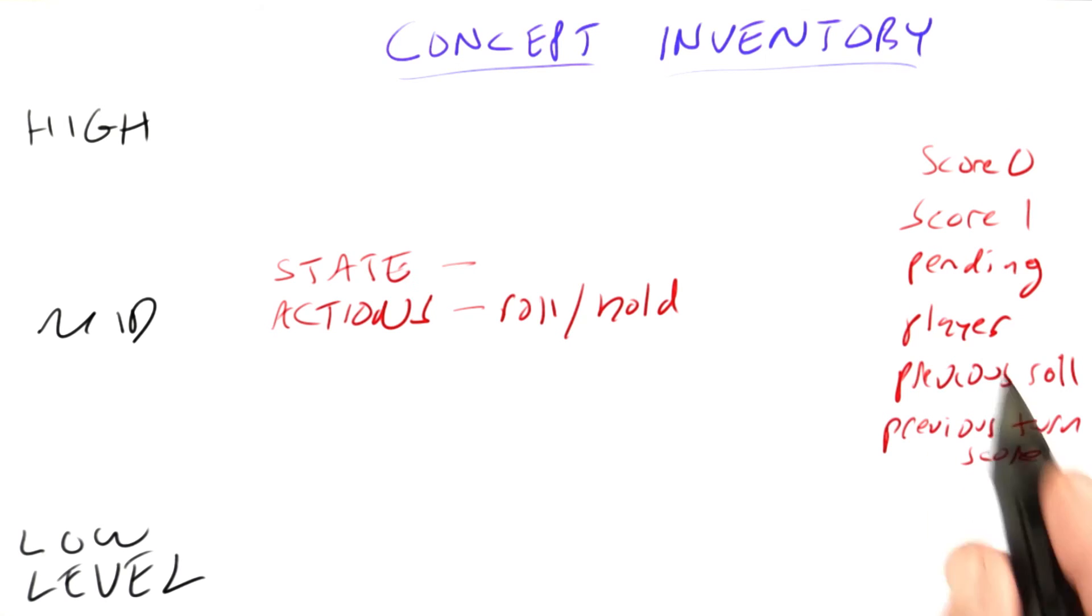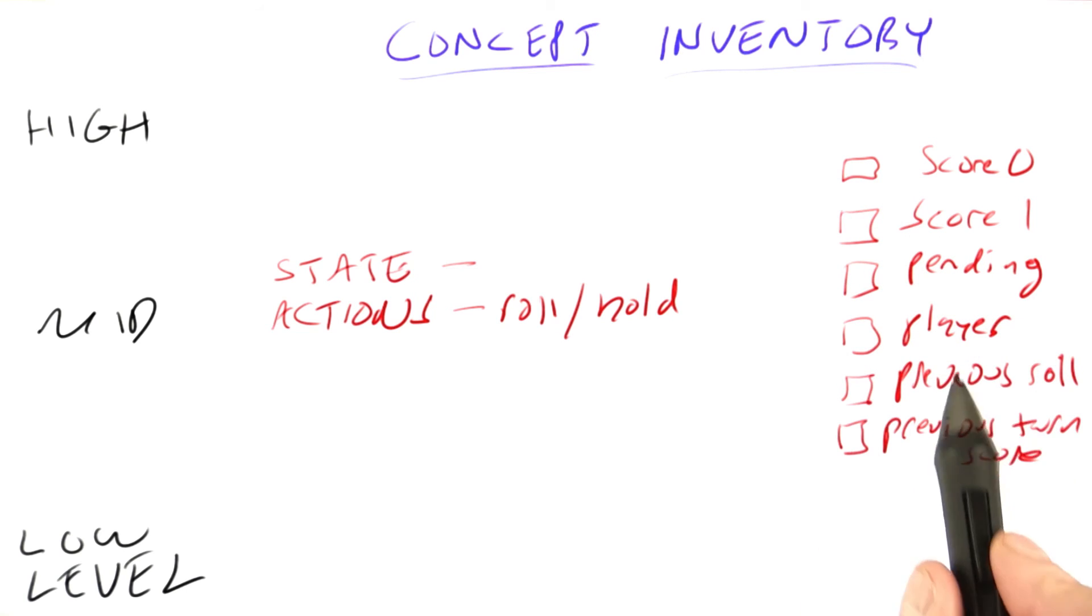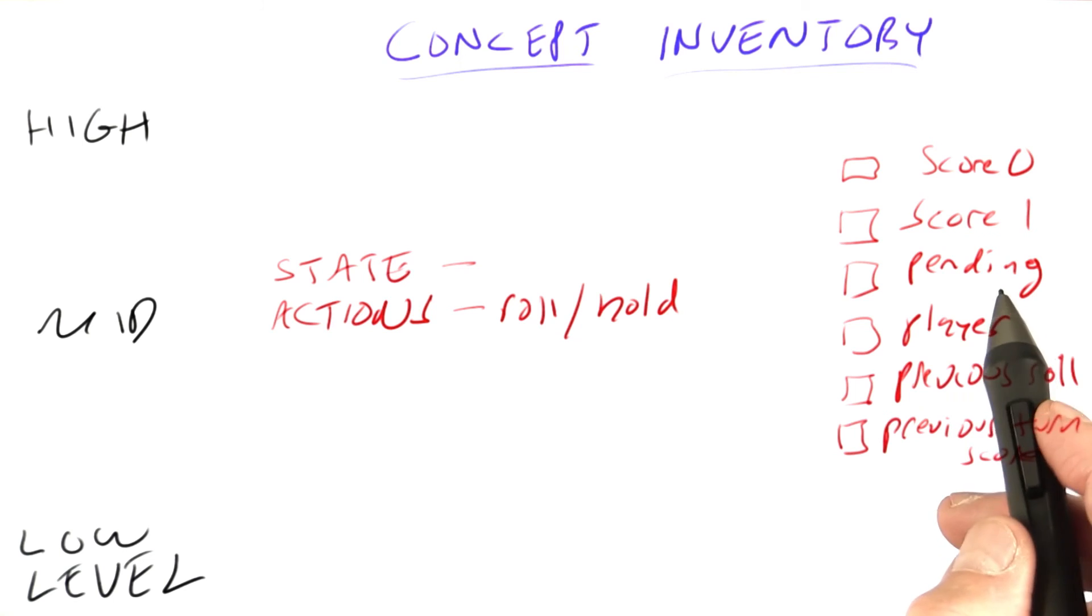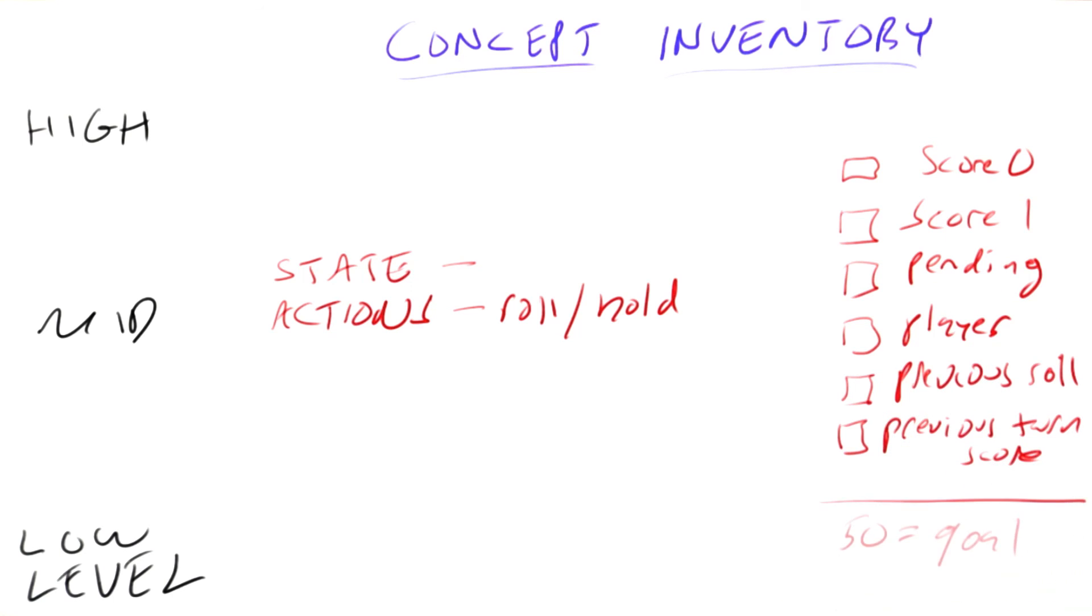You might be able to think of other possibilities, but I want you to tell me which one of these are necessary to describe the state of the game. I should say that we're assuming that the goal of the game, the number of points you need to win, is constant and doesn't need to be represented in each individual state. We just represent it once for the whole game. Which of these are necessary for the current state?